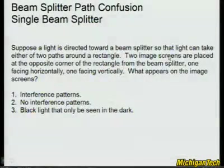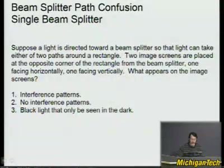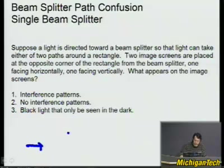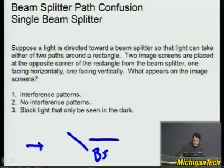Let's go to the quizzing. Suppose light is directed toward a beam splitter so that light can take either of two paths around a rectangle. So here we go — light comes in here, and here's a beam splitter. BS means beam splitter. So then light can go here.